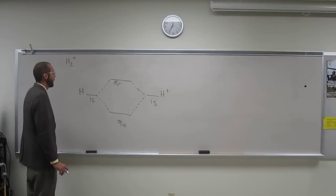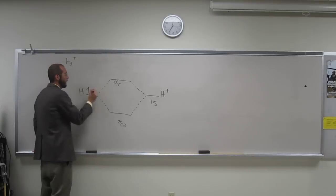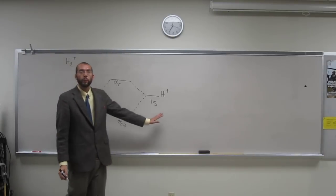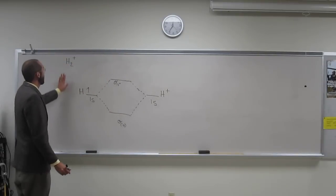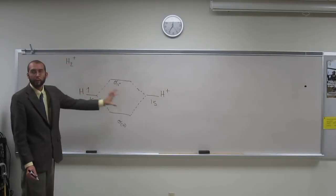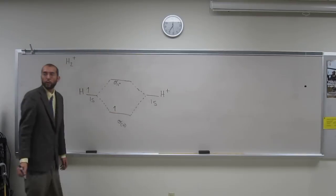So just fill up the orbitals. Hydrogen has one electron and H+ has no electrons, right? So when we take those electrons and fill them up here, we just put the one down there.